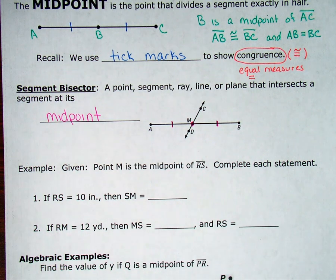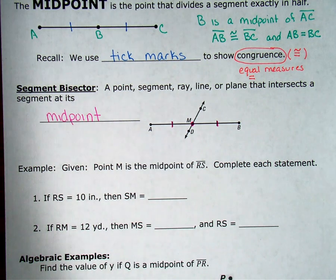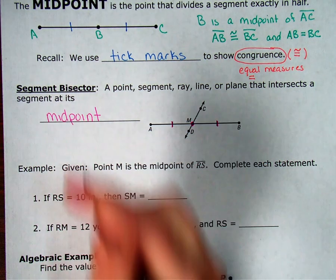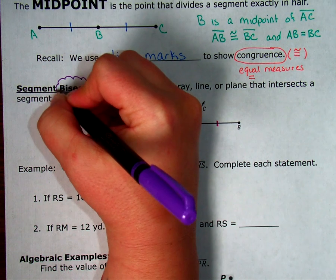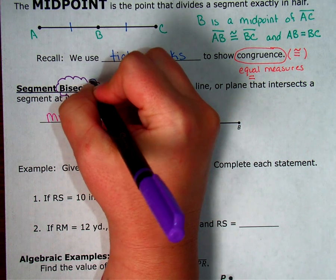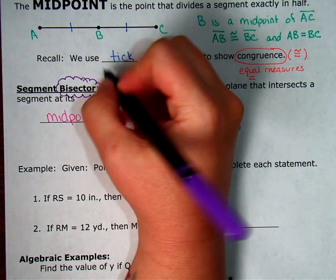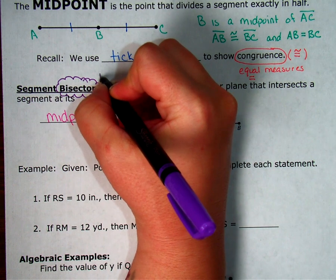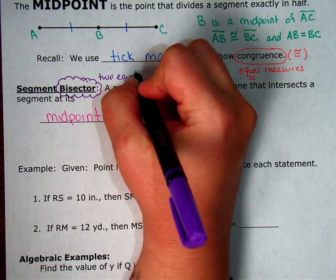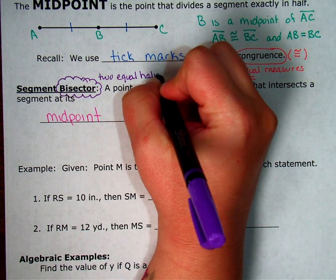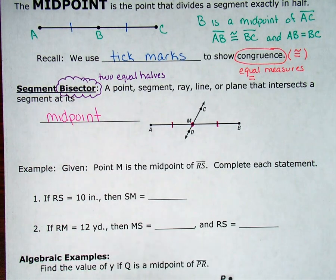When we see the word bisector, we're always going to remember cuts in half equally. So anytime I see the word bisector, I know I'm going to end up with two equal halves. So that's something we always want to remember as like a helpful hint when we're doing problems. If I see this word bisector, I know that's going to mean two equal halves. It's going to divide into two equal halves anytime I see that word bisector.